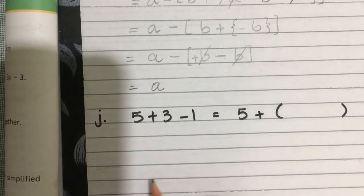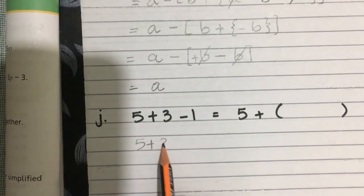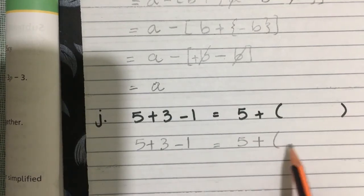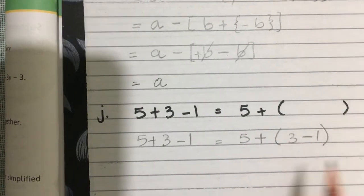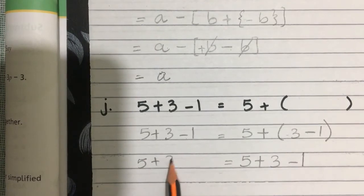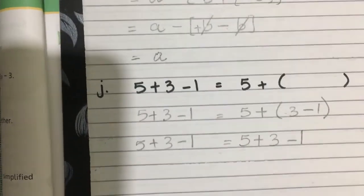So 5 plus 3 minus 1 equals 5 plus 3 minus 1. Why? Because 5 plus, plus times plus equals plus, 3 minus 1. 5 plus 3 minus 1, these are same. This is the answer.